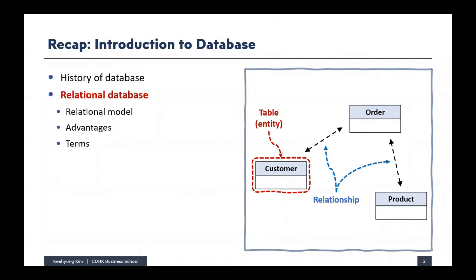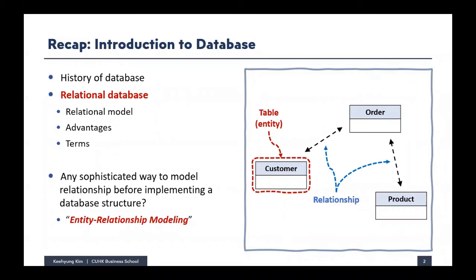In the relational model, we structure the database like this — there is a table, which we also call an entity. Our data will be stored in the table. If there are multiple tables in the database, each storing different types of information, these tables are somehow related to each other. For example, a customer will make an order, so we have to establish a relationship between the customer table and the order table. That's what we call a relationship in the relational database.